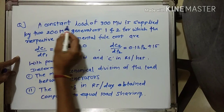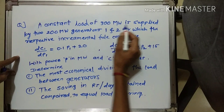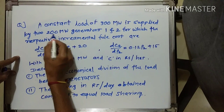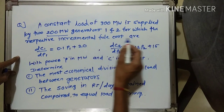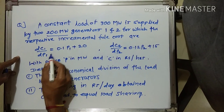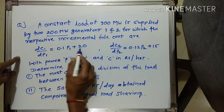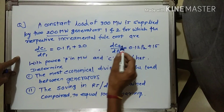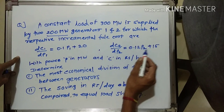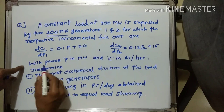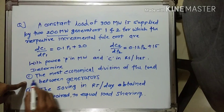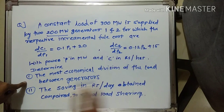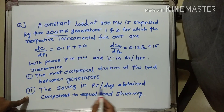The first question is: a constant load of 300 megawatt is supplied by two 200 megawatt generators, 1 and 2, for which the respective incremental fuel costs are DC1/DP1 = 0.1P1 + 20, and DC2/DP2 = 0.12P2 + 15, with power P in megawatt and C in rupees per hour. Determine: first, the most economical division of the load between generators, and second, the saving in rupees per day compared to equal load sharing.